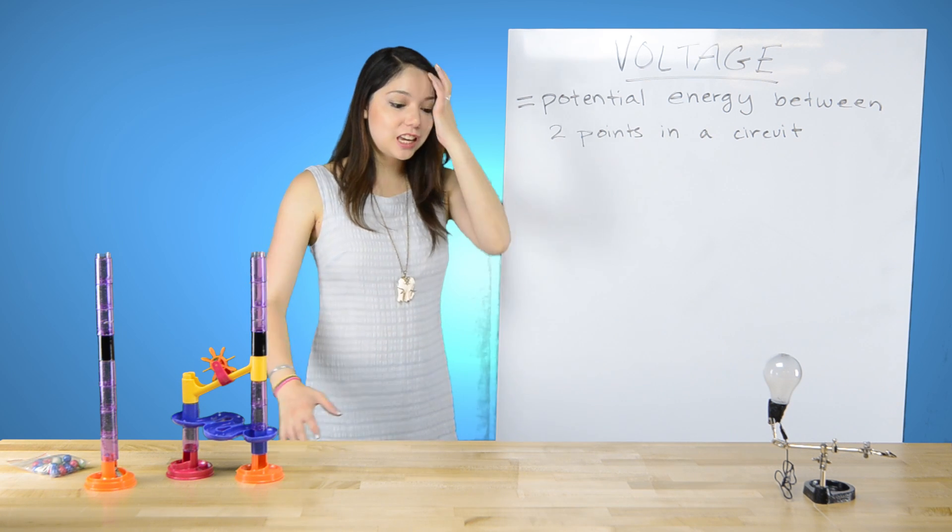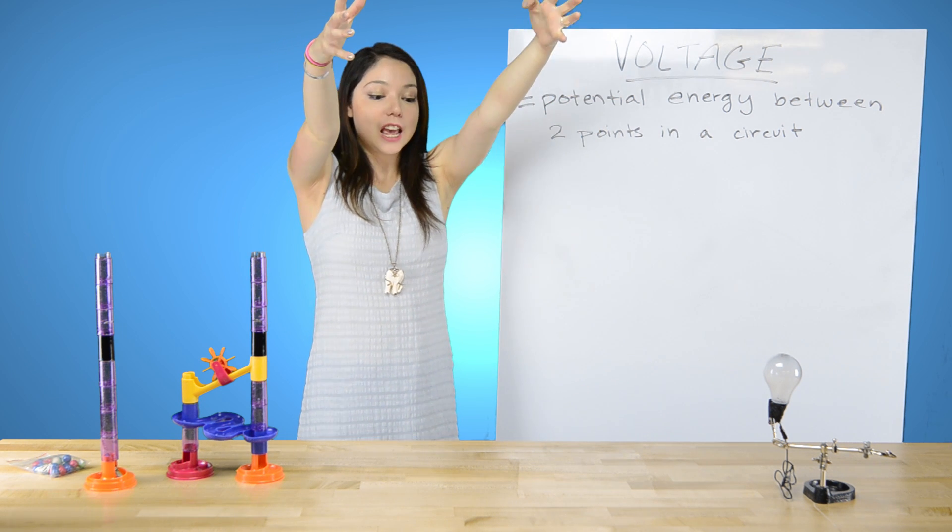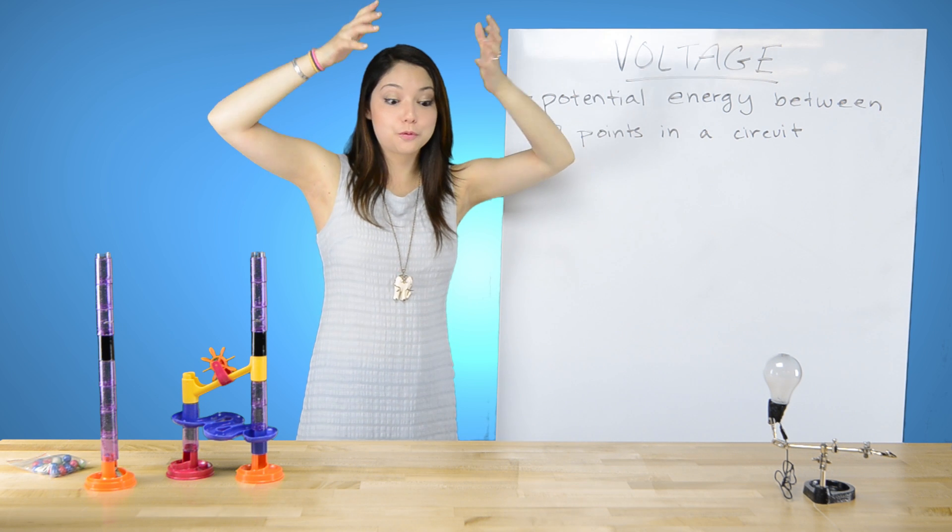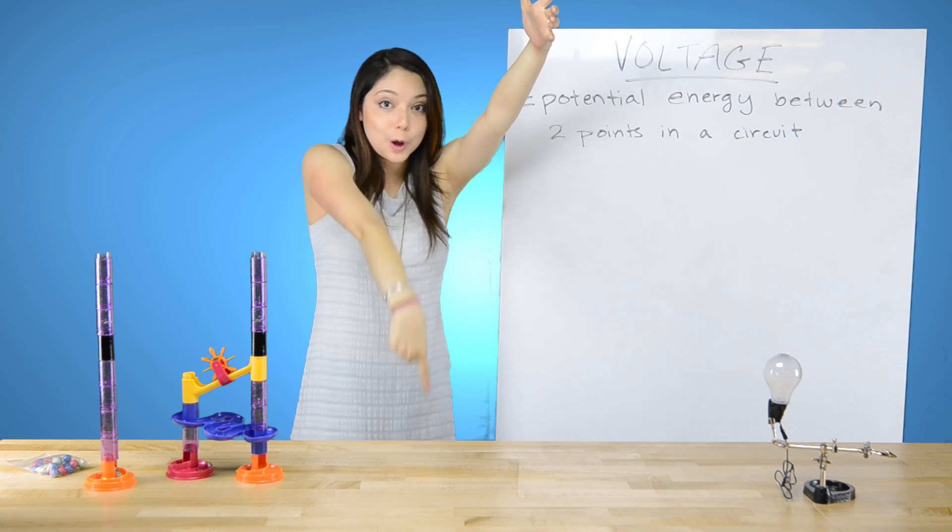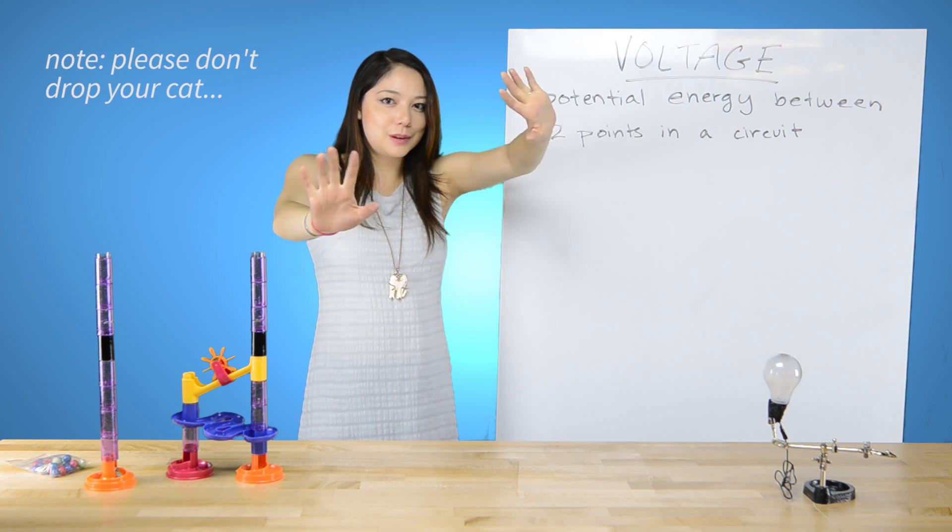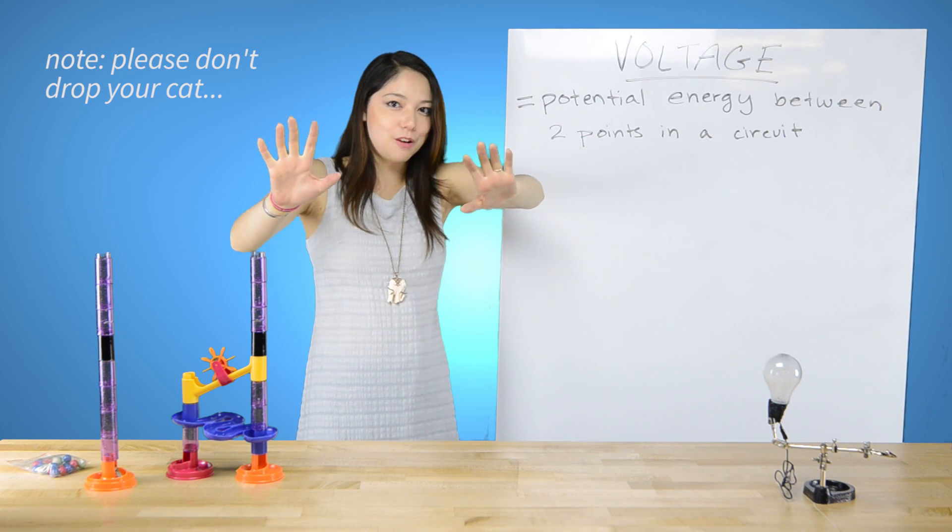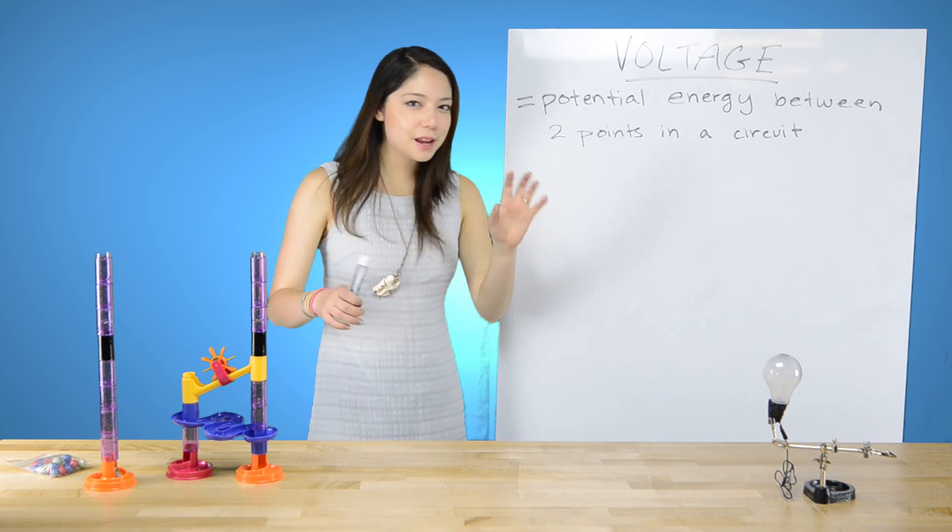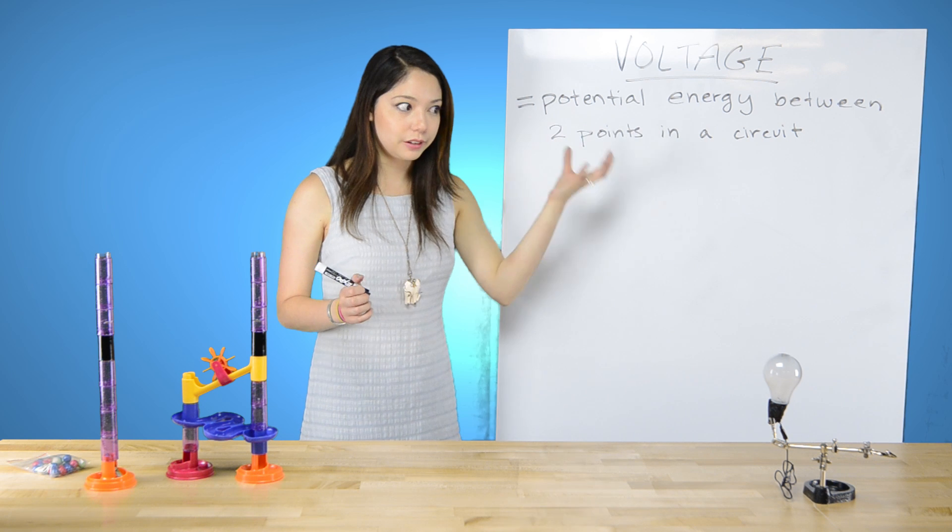If you're holding a cat off of the top of a skyscraper, its potential energy is very high because it has the potential to fall very far. And I said cat because it'll land on its feet and then meow ferociously and then just walk back into the building. This same metaphor can kind of be used for voltage and electricity.